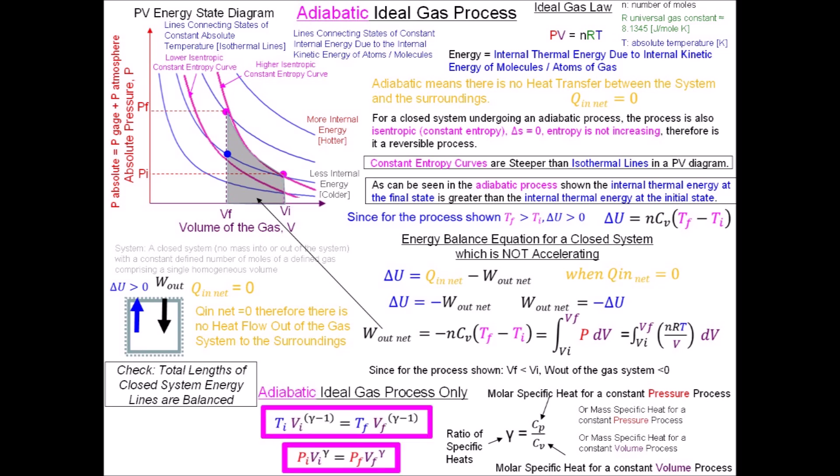For adiabatic ideal gas processes only — shown inside a magenta box — there are relationships between initial temperature and initial volume and final temperature and final volume, as well as at all intermediate states. These relationships involve the ratio of specific heats. Additionally, there is a relationship between pressure and volume at all states: the pressure at the initial state times the volume at the initial state raised to the ratio of specific heats equals the pressure at the final state times the volume at the final state raised to the ratio of specific heats.